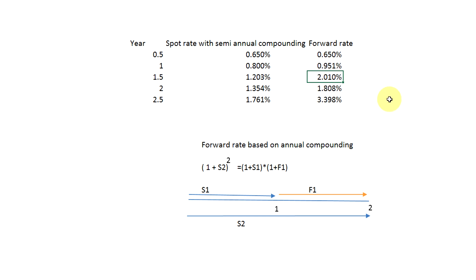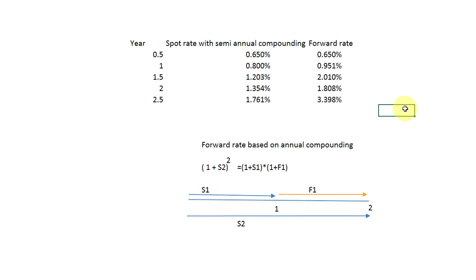It's quite simple: once you have spot rates, calculating forward rates is straightforward. The key thing to focus on is what type of compounding has been applied to the spot rate, so you can apply the same compounding to the forward rate as well. If you have any questions, post them in the comment section or drop us an email. Thank you.